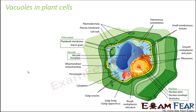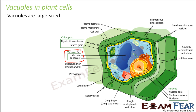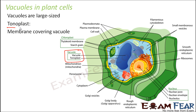In plant cells vacuoles are very important. The vacuole is the most prominent organelle you can see in a plant — it is very large. There is a membrane which covers the vacuole, and that is called the tonoplast.